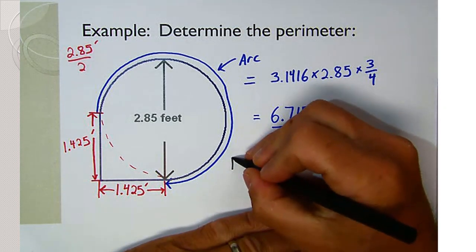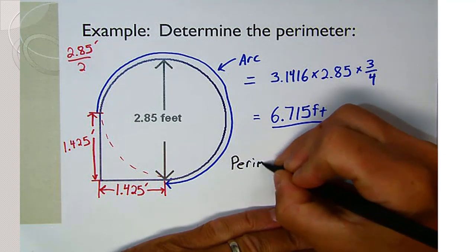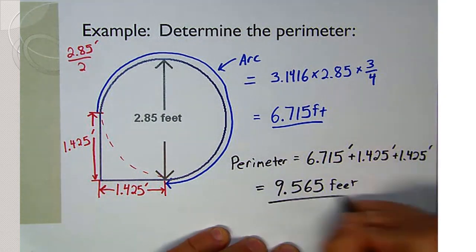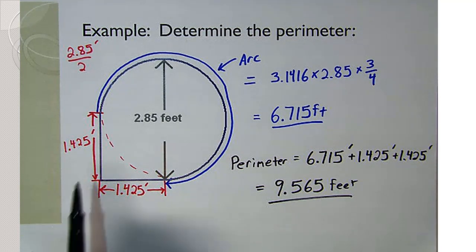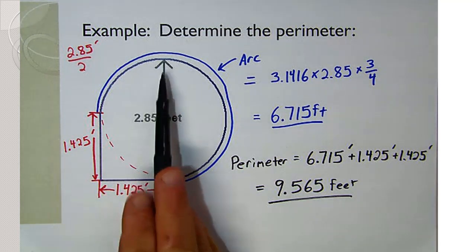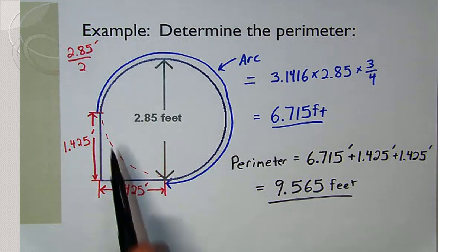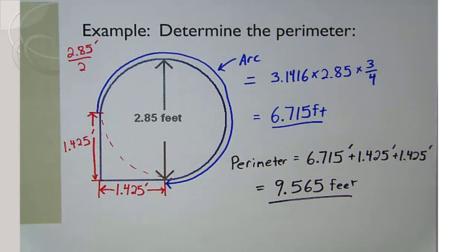That's everything we need to find the perimeter. The perimeter is the arc plus the two straight edges. Adding six point seven one five feet plus one point four two five plus one point four two five, we get nine point five six five feet. You could also have left the two straight edges combined as two point eight five — nothing wrong with that.